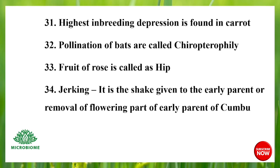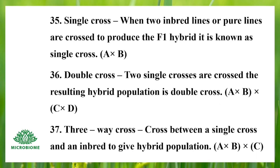Jerking is the shaking given to the male parent to remove the floret parts of the early parent in kambu. Single cross is when two inbred lines or pure lines are crossed to produce an F1 hybrid, denoted as A × B. Double cross is when two single crosses are crossed; the resulting hybrid population is denoted as (A × B) × (C × D). Three-way cross is a cross between a single cross and an inbred line to give a hybrid population, denoted as (A × B) × C.